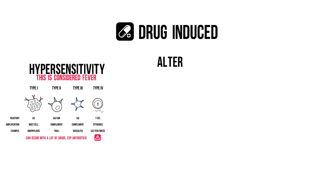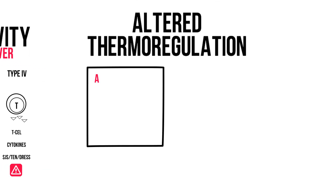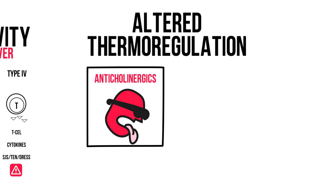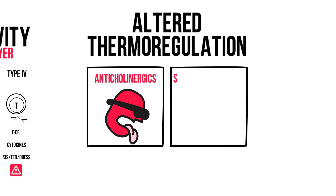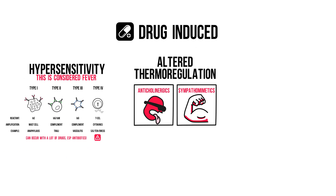The second category of drug-related hyperthermia involves altered thermoregulation. Examples are anticholinergic agents, which disturb hypothalamic function, and sympathomimetics, which not only disturb hypothalamic function but also cause secondary heat production due to increased muscle activity.